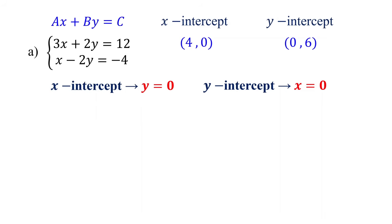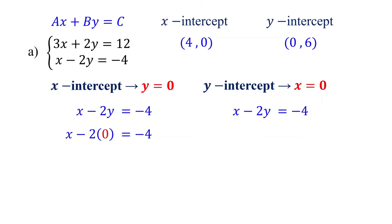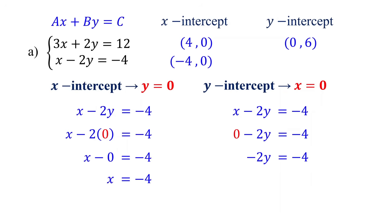Now, let's find the intercepts for the second equation. Replace y with 0 to find the x-intercept. 2 times 0 equals 0, and we get x equals negative 4. So, the x-intercept of the second equation is (-4, 0). Set x to 0 to find the y-intercept. Divide both sides by negative 2 to isolate y. Negative 4 divided by negative 2 is 2, giving us the y-intercept (0, 2).